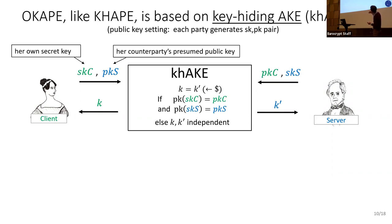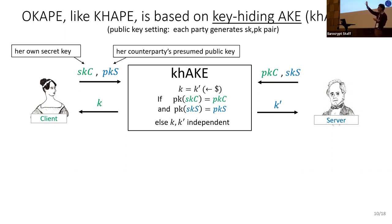The protocol I'm discussing is a modification of the CAPE protocol from last crypto — they use similar tools and one comes from the other as an improvement. Both use something we call key-hiding authenticated key exchange. Unlike standard AKE where public keys are publicly known, here each party must send both their own secret key and what they believe the counterpart's public key is.